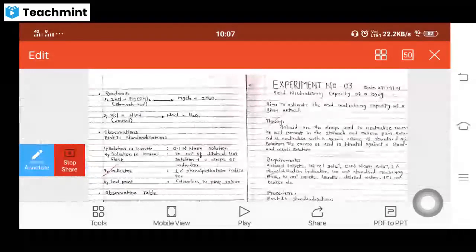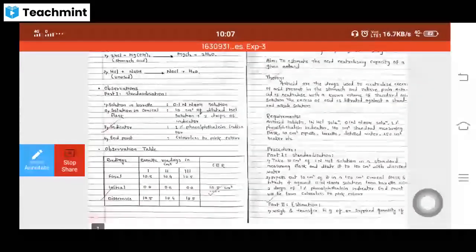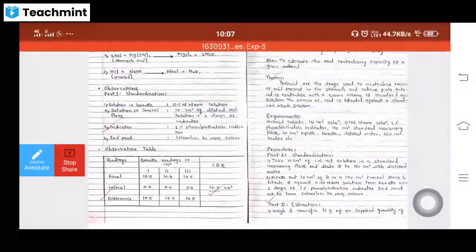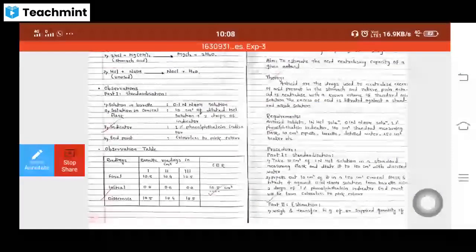Aim of this experiment: to estimate the acidity of the given antacid. Theory: Antacids are drugs used for neutralizing the excess acid present in the stomach. Do you know which acid is present in the stomach?